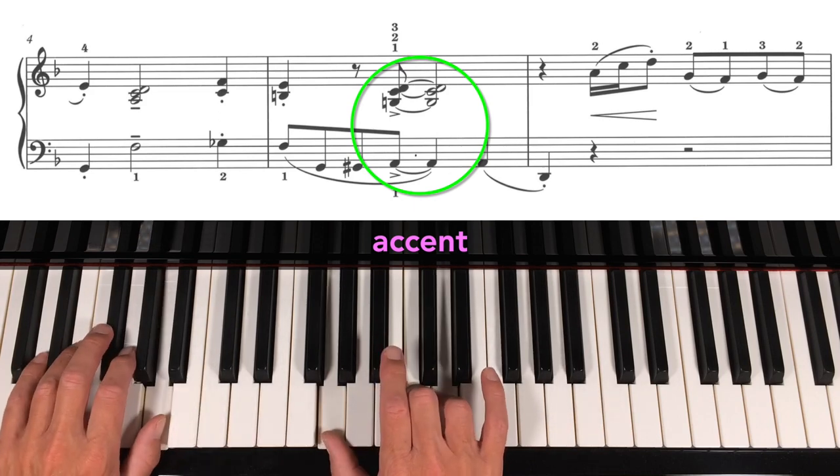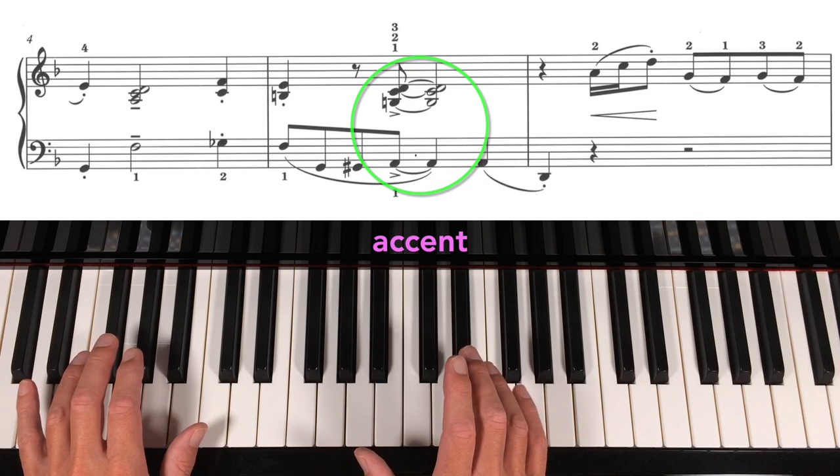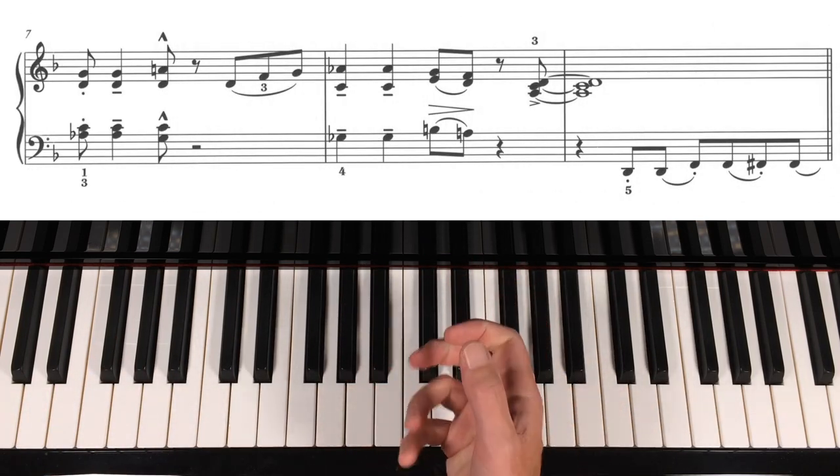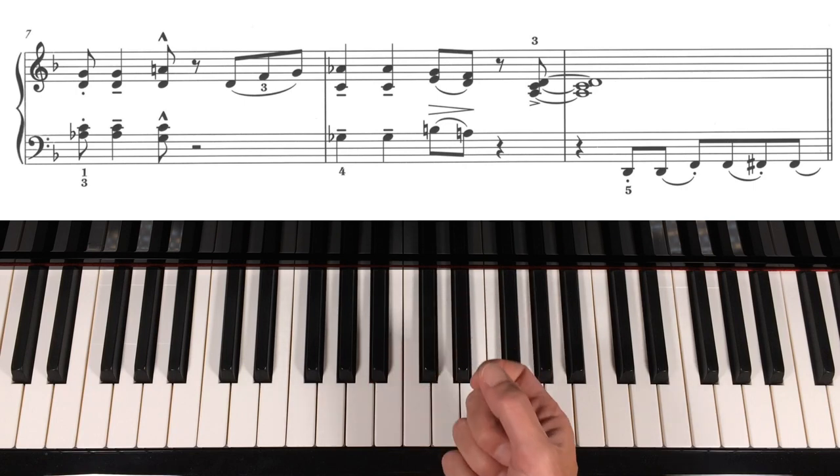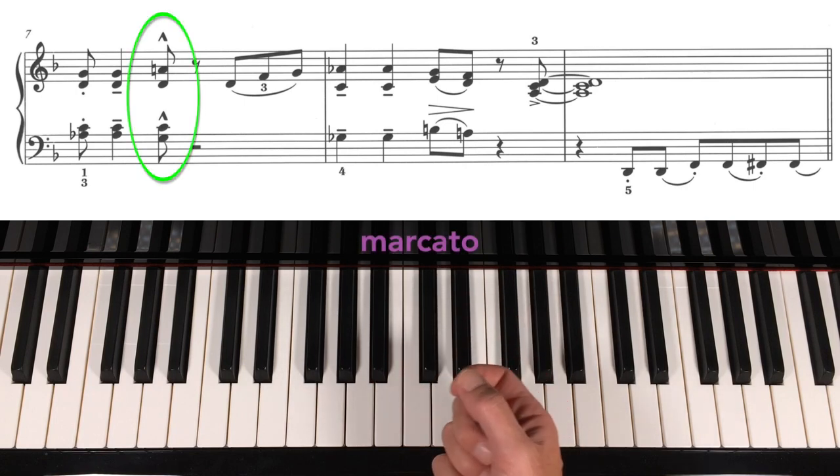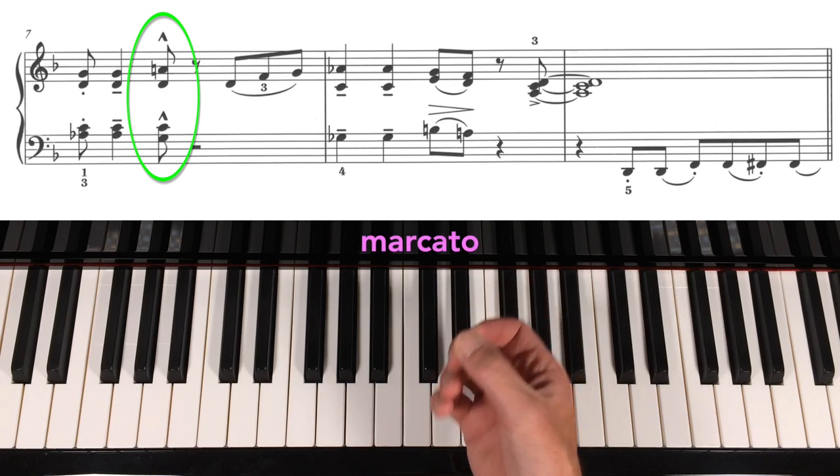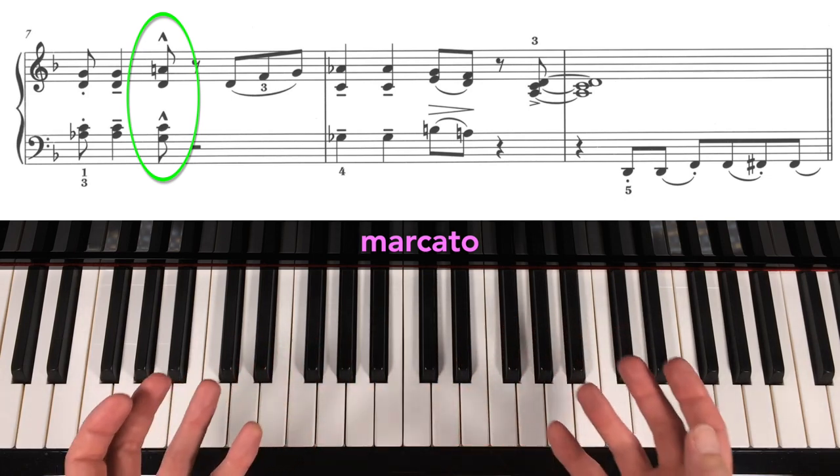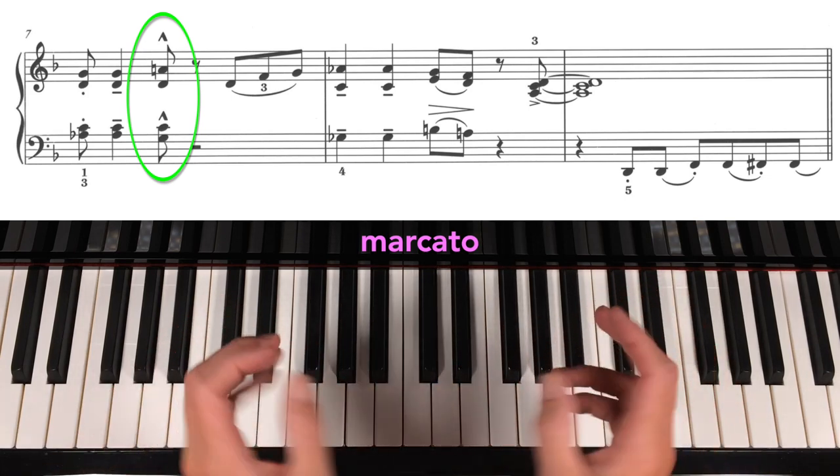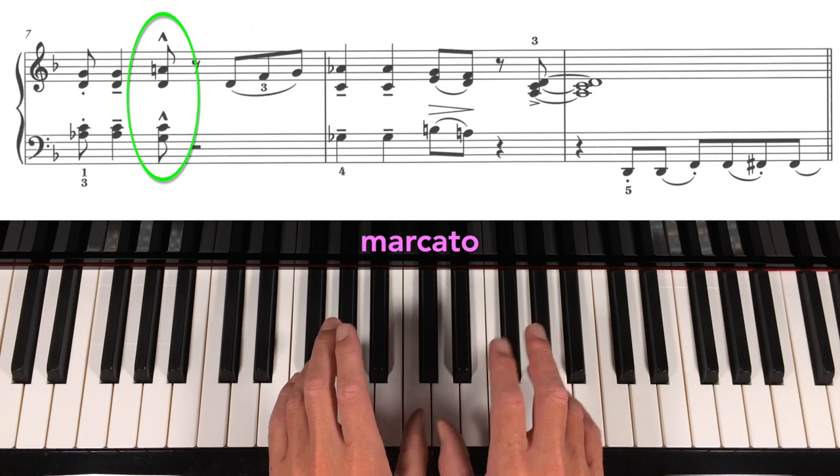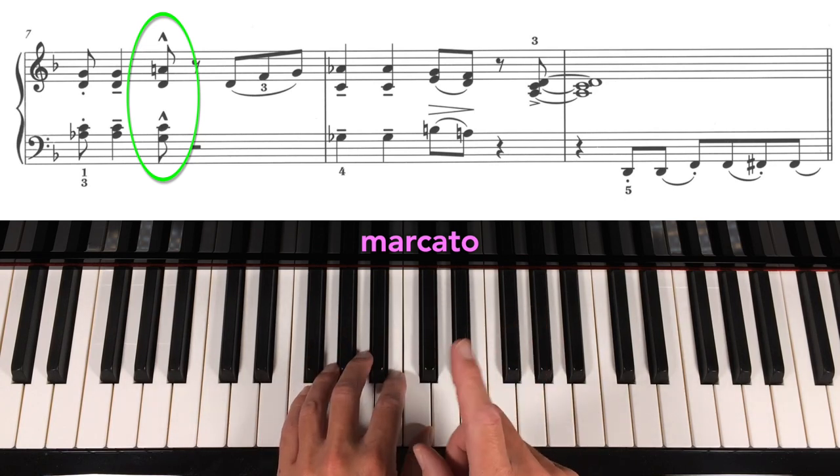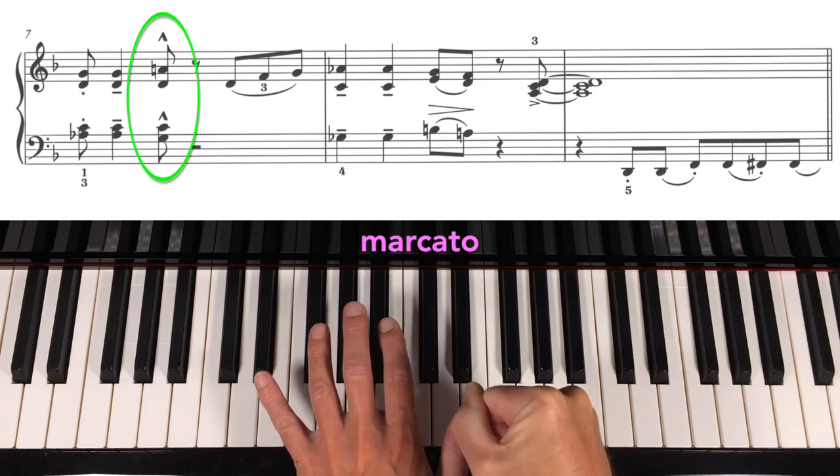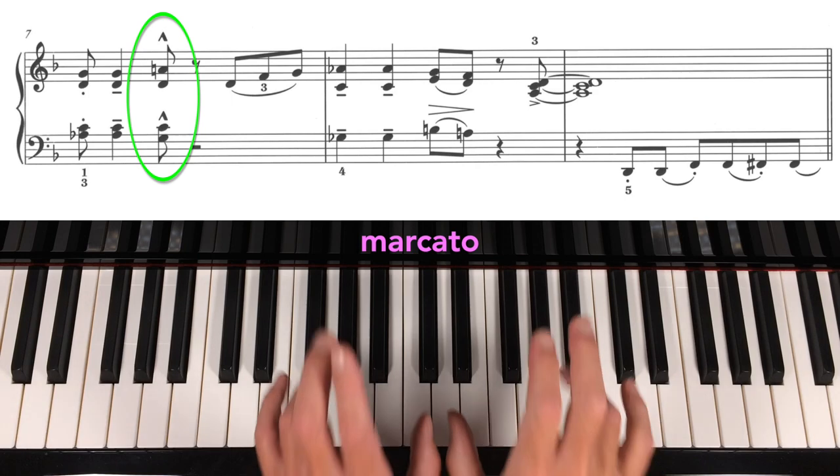Attack it aggressively and give it its full value. And in a moment, while we're discussing these different types of articulation, in bar seven, we've got a marcato sign. Marcato, marked. So this note has to be, this chord in this case, has to be more prominent than anything else, a bit of a whack. So you might be thinking, what's the difference between that and an accent? I think marcatos, if anything, I tend to stress them even more, and important, crucially, they are short.